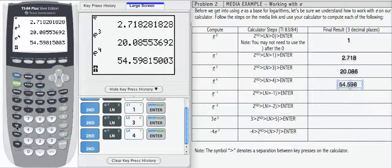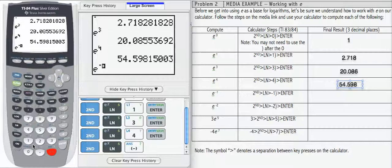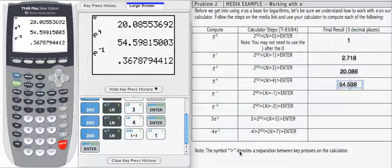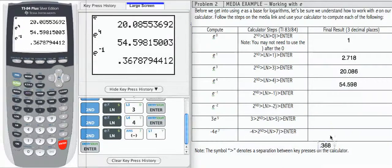We're going to evaluate e to the negative one power. On this particular calculator, the way that the exponent is displayed here as an actual exponent, I do not need to enter the second parenthesis. If your calculator doesn't display this way, you will need that second parenthesis. 0.36787, let's round that, that gives us 0.368.